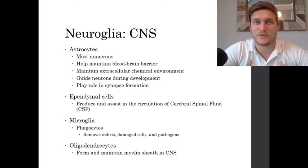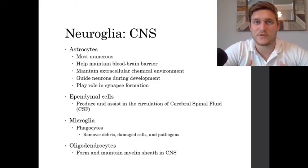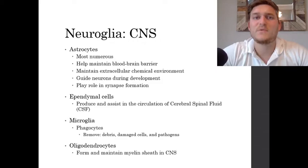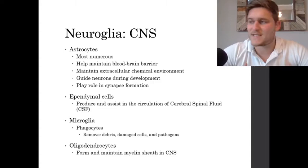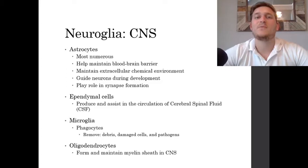In order to maintain that cerebrospinal fluid, we have what's called ependymal cells, which help produce some of that fluid. However, most of the fluid actually comes from the choroid plexus located in the lateral ventricle and the fourth ventricle. Then we have microglia, which are phagocytes of the central nervous system. These cells are going to be responsible for getting rid of unwanted debris, damaged cells, and different pathogens that could potentially harm our central nervous system.